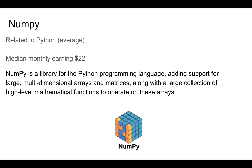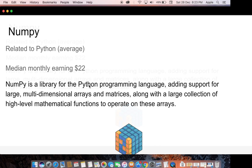The last topic today is NumPy, which is related to Python. It may be average in student searches since students may not know much about this topic yet, but I will show the Google Trends which shows it is highly demanded. Its monthly median earning is $22. NumPy is a library for the Python programming language, adding support for large multidimensional arrays and matrices, along with a large collection of high-level mathematical functions to operate on those arrays.